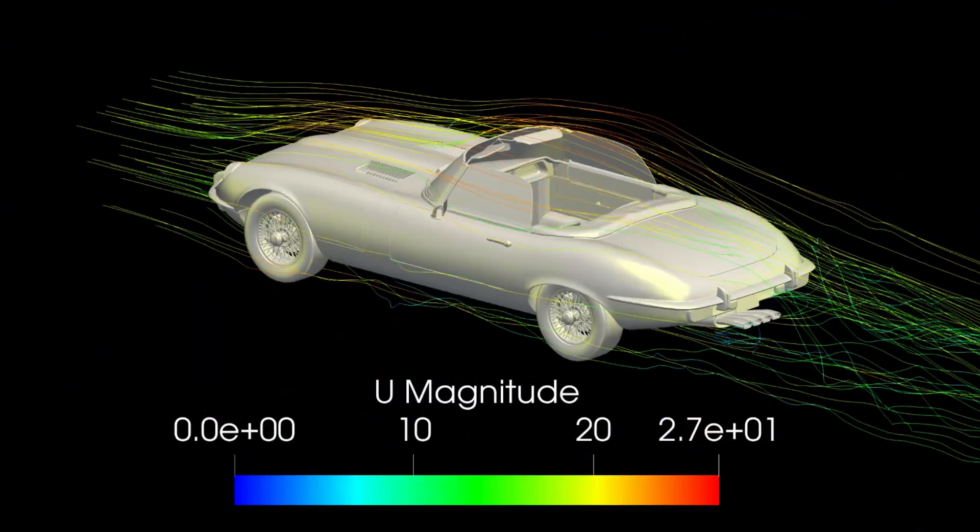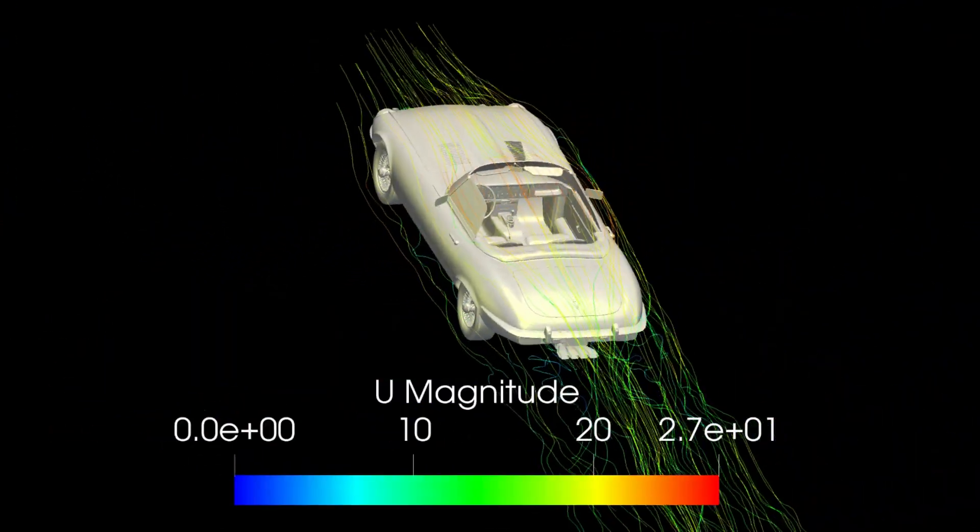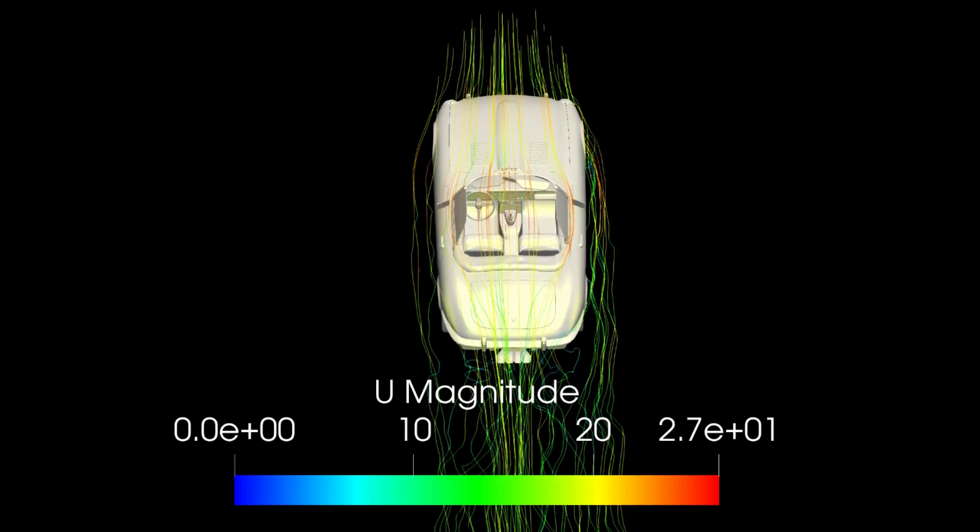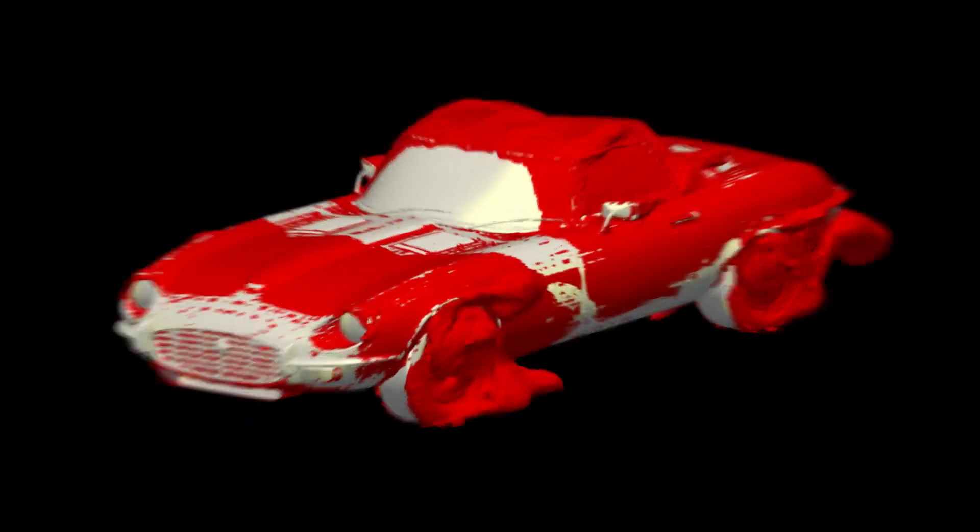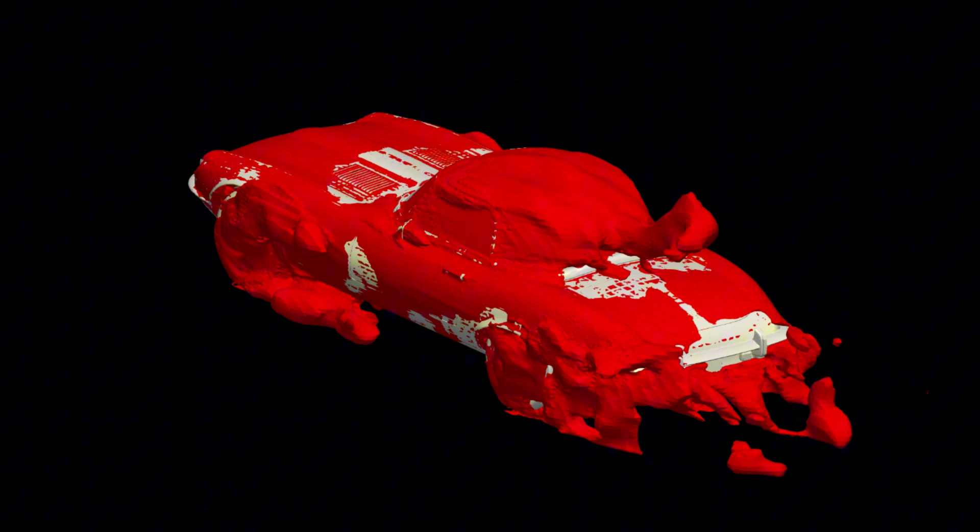And perhaps a little surprisingly, the streamlines still follow a very similar path. They pop up over the cabin pretty equally. Maybe you could argue that the cabin drag was slightly lower here?